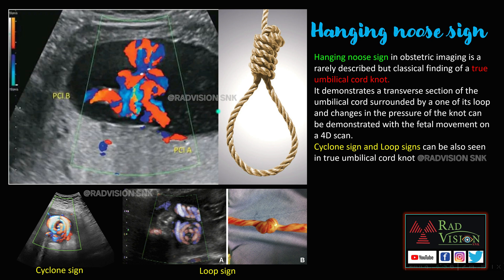Next, what is the hanging noose sign? The hanging noose sign is rarely described in obstetric imaging, but it is a classical finding of a true umbilical knot. It demonstrates a transverse section of the umbilical cord surrounded by one of its loops. Whenever the transverse section of the umbilical cord is surrounded by one of its loops, it resembles a hanging noose — classically seen in a true umbilical cord knot.